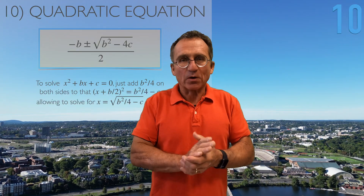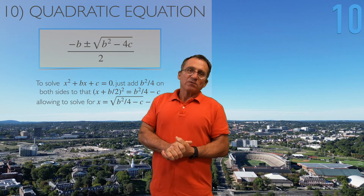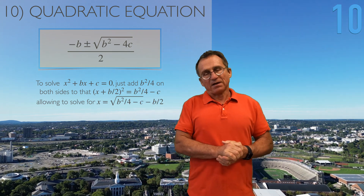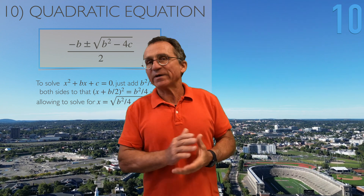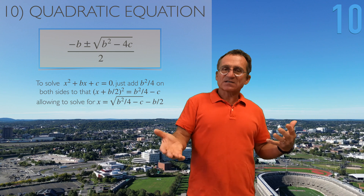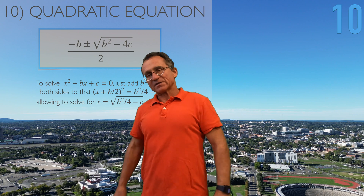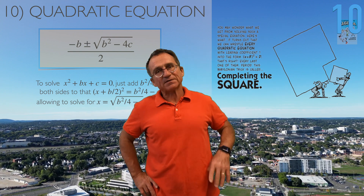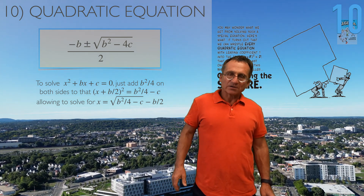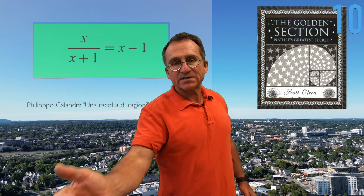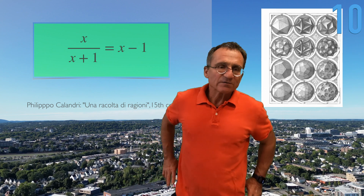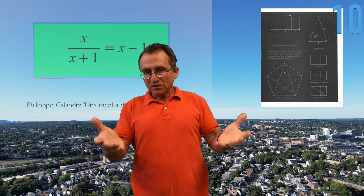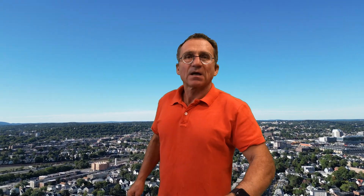Finally, the last topic of elementary algebra is the quadratic equation: solve x² + bx + c = 0. There's a beautiful formula obtained by completing the square — adding b²/4 to both sides so you can factor (x + b/2)² on the left, then take the square root and subtract b/2 to get the solution. Historically, Filippo Calandri first looked at this equation, and interestingly the solution works out to the golden ratio.